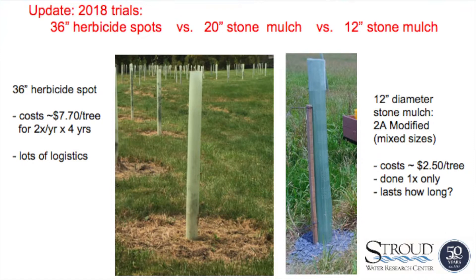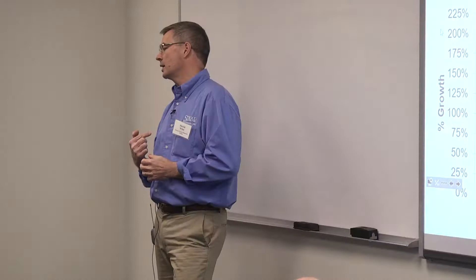On whether weeds pop up through the 2A modified: my field guy Kalen said in year one he doesn't see much coming through. We'll have to watch, because seeds can fall on top, root down through, and not emerge through the stone. This is first-year data from 2018 — there was no water stress that year. You don't make decisions based on single-year data. But looking at growth results, we're not suffering from eliminating competing vegetation. Growth between herbicide spots and stone mulch treatments is similar. We're not ready to deploy this on a wide basis yet, but it is encouraging.